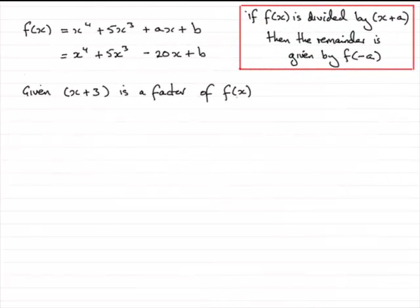Hi. Now in the last part of this question, we're told that x plus 3 is a factor of f(x). From the earlier part, we discovered that a was minus 20, so I've filled that in here. We've got f(x) now equal to x to the 4 plus 5x cubed minus 20x plus b.